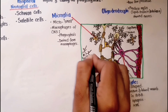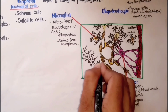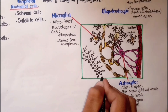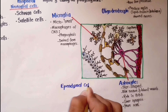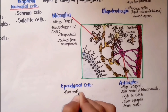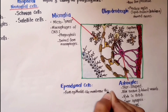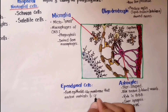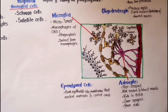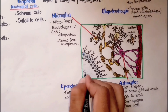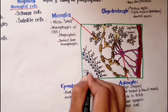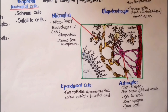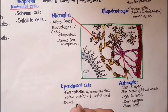The last type of central nervous system neuroglia is the ependymal cells. Ependymal cells form an epithelial-like membrane that encloses the ventricles in the brain and the central canal of the spinal cord. These enclosed spaces contain cerebrospinal fluid, which protects and nourishes the brain and spinal cord. They also form the blood-cerebrospinal fluid barrier.